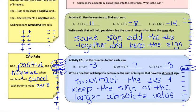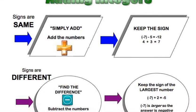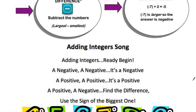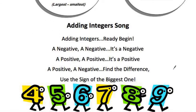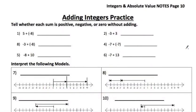Here are all the rules written out nicely. And if you really want to do the song, you can sing it — it goes to the tune of 'the arm bone's connected to the hand bone.' It says: adding integers, ready to begin — a negative and negative, it's a negative; a positive and positive, it's a positive; a positive and negative, find the difference, use the sign of the biggest one.